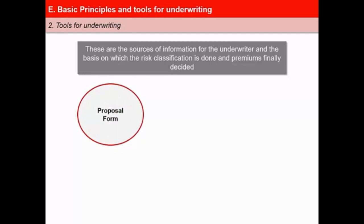The key tools for underwriting are as follows. First, proposal form: this document is the base of the contract, where all the critical information pertaining to the health and personal details of the proposer, such as age, occupation, build, habits, health status, income, premium payment details, etc., are collected. Any breach or concealment of information by the insured shall render the policy void. Second, age-proof: premiums are determined on the basis of the age of the insured. Hence, it is imperative that the age disclosed at the time of enrolment is verified through submission of an age-proof.